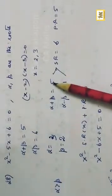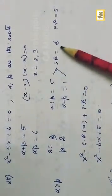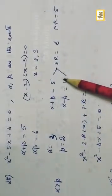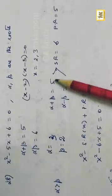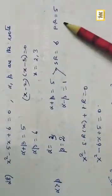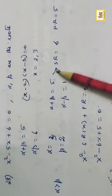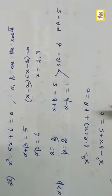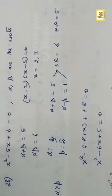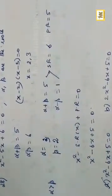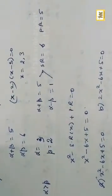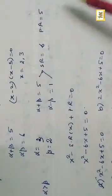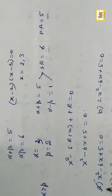Sum of the roots = 5+1 = 6. Product of the roots = 5×1 = 5. So the equation is x² - 6x + 5 = 0.